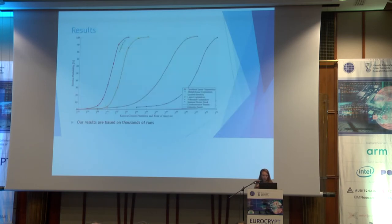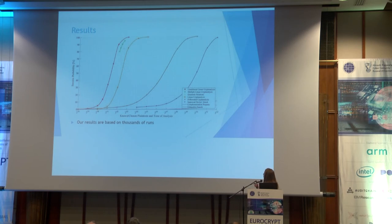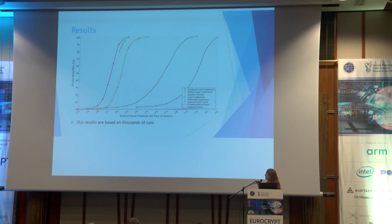You can see this in the graph, where this is the success rate of the attack, and this is the complexity of the attack — the maximum between the number of needed known or chosen plaintexts and the time of analysis. The brown curve is differential cryptanalysis, the orange one is linear cryptanalysis, in red you can see our results for conditional linear cryptanalysis, and in between there are various extensions of linear cryptanalysis. We can see from the graph that our result is better than all previous attacks against DES.